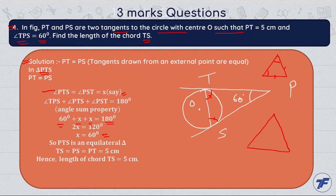This means triangle PTS forms an equilateral triangle, with all angles equal to 60°, 60°, and 60°. Since all angles are equal, all sides are also equal. So the length of all sides equals the given side length, which is 5 cm. Therefore, the length of chord TS is also 5 cm. We solved this directly using the equilateral triangle concept.